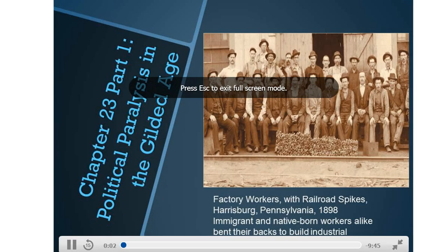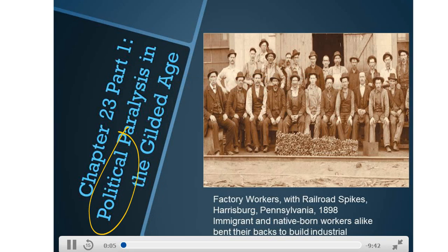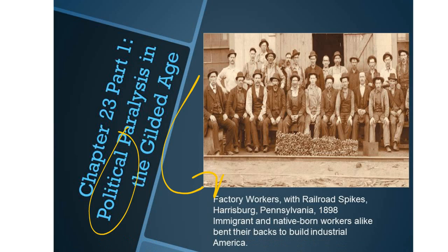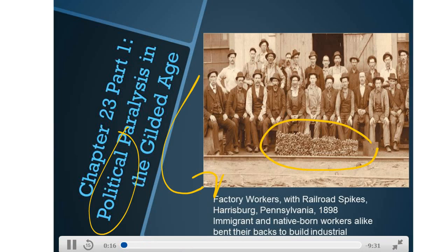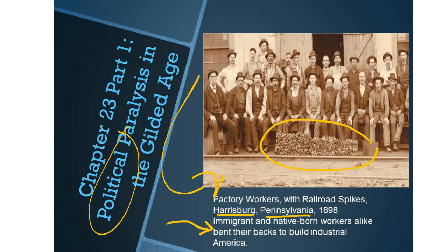In this video lesson, we'll discuss politics and corruption in the Gilded Age. This picture shows factory workers along with railroad spikes in front of them, taken in Harrisburg, Pennsylvania in 1898. Immigrant and native-born workers alike were building industrial America.